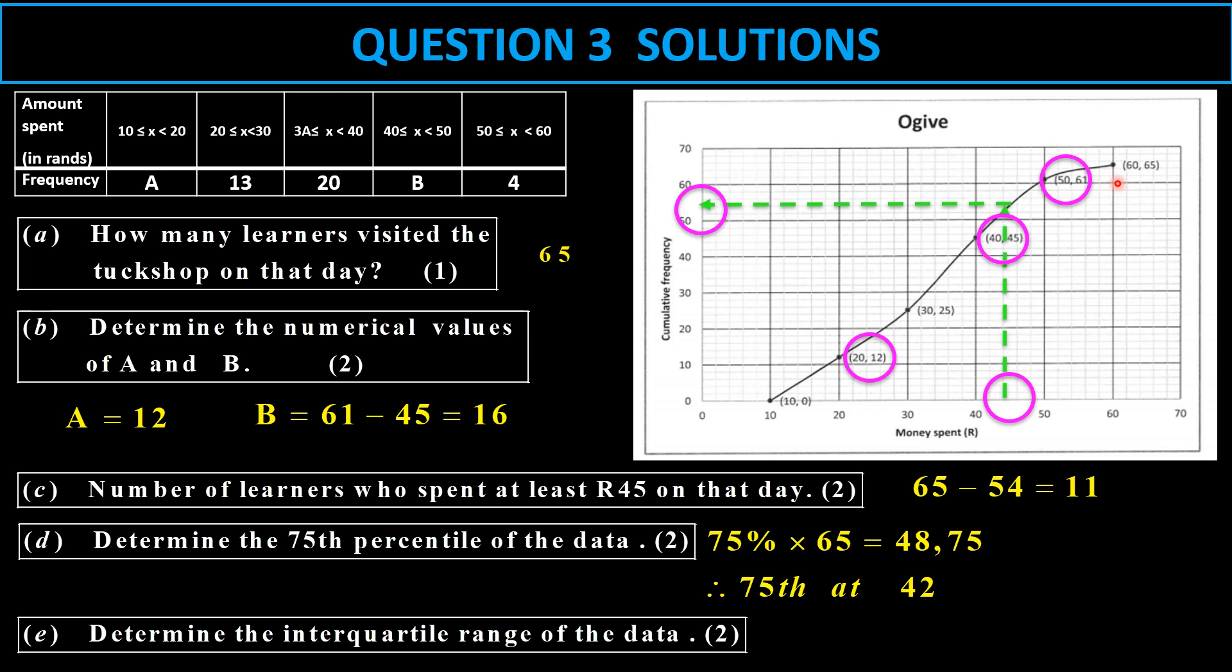Then interquartile range, that is the third quartile minus the first quartile. Third quartile we just worked out is 42. First quartile, we have to calculate that. You can take the reading for the first quartile. Let's say it's around about 24. So 42 minus 24 gives us interquartile range is 18.